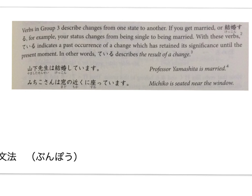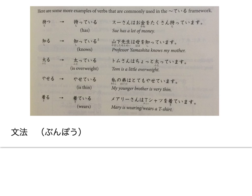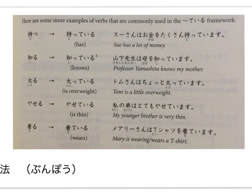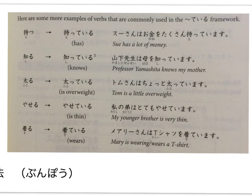For example, if you get married, that would be 結婚しています — your new state is being married. Or: Michiko-san wa mado no chikaku ni suwatte imasu — she is in the state of sitting near the window.